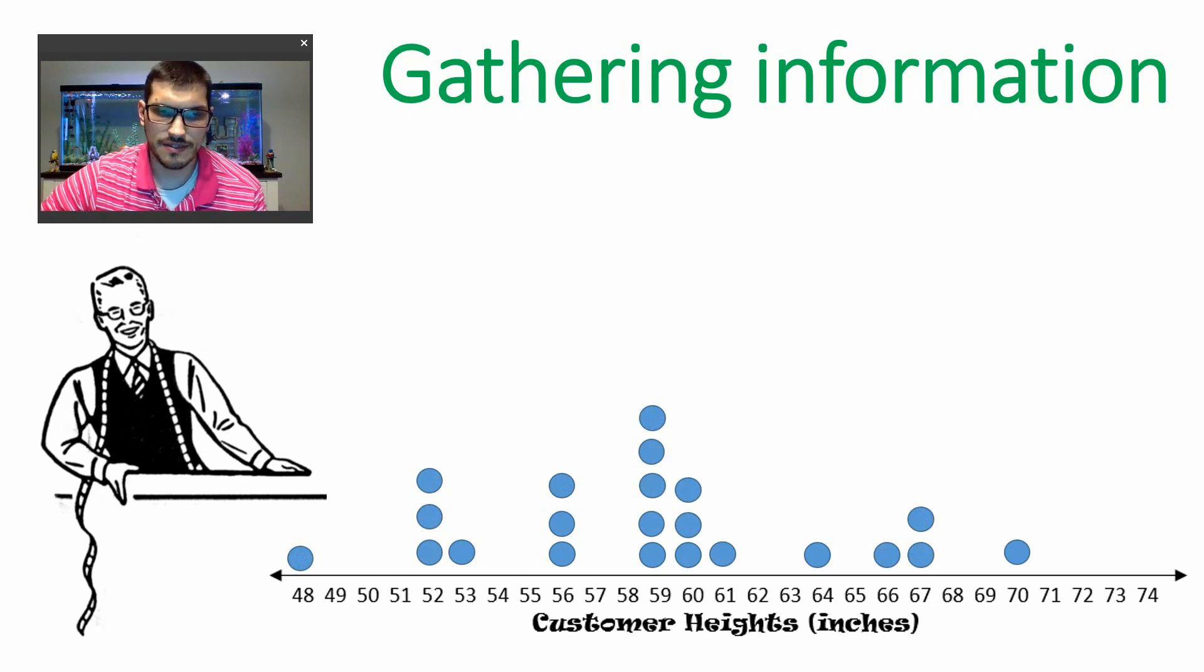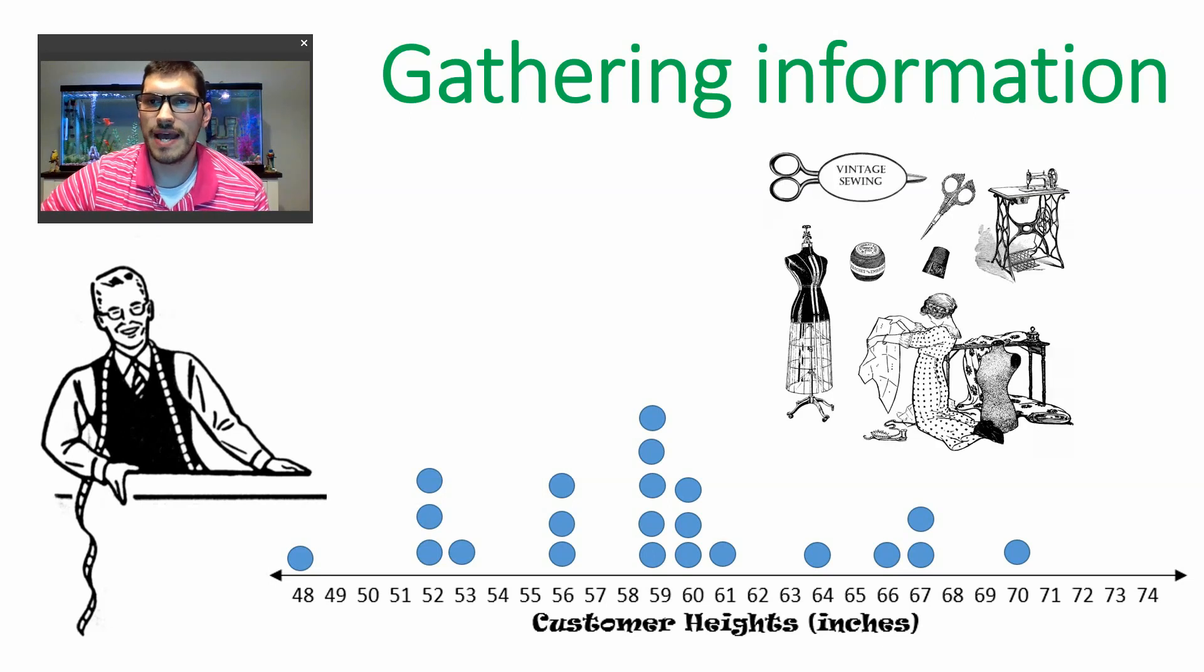So we can see the smallest person there is 48 inches. The tallest person is 70 inches, and this tailor here would have to create all of these clothing for each individual person. So for every dot there would be some more clothing that they would have to create. Back in the day this is what it would look like when they were making clothes. So it was a long process. It took a lot of time to make that individual person.